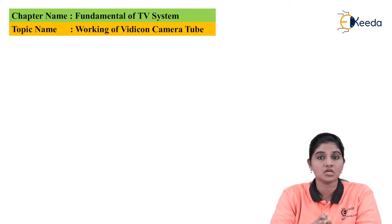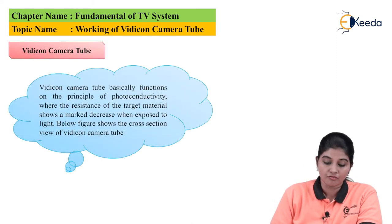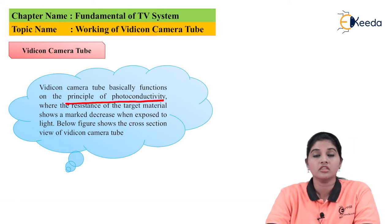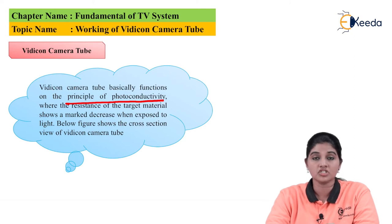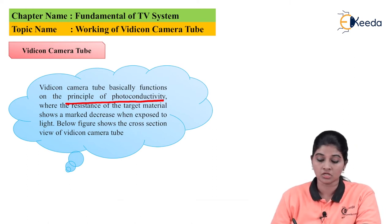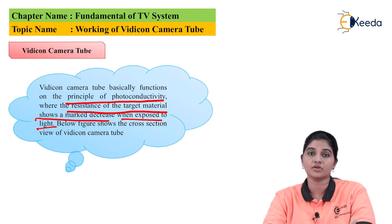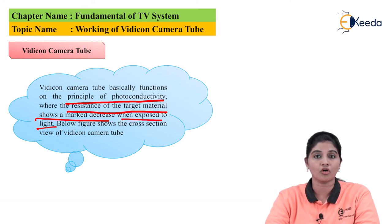Now in this topic we are going to discuss about the construction and working of Vidicon camera tube. The Vidicon camera tube functions on the principle of photo conductivity. In the case of photo conductivity, the resistance or conductivity of the material changes when light is incident on it. Specifically in the Vidicon camera tube, the resistance of the target material decreases when it is exposed to light — that is, the resistance of the photo conductive material decreases when light is incident on it.